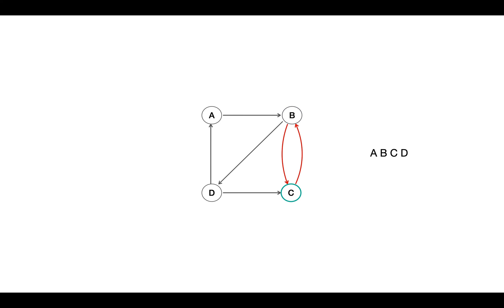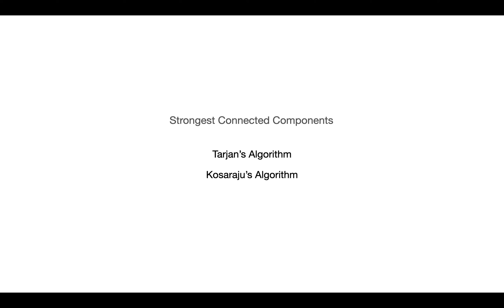Now in this type, we're going to discuss two algorithms. First is Tarjan's algorithm, and second is Kosaraju's algorithm to find strongly connected components of the given graph.